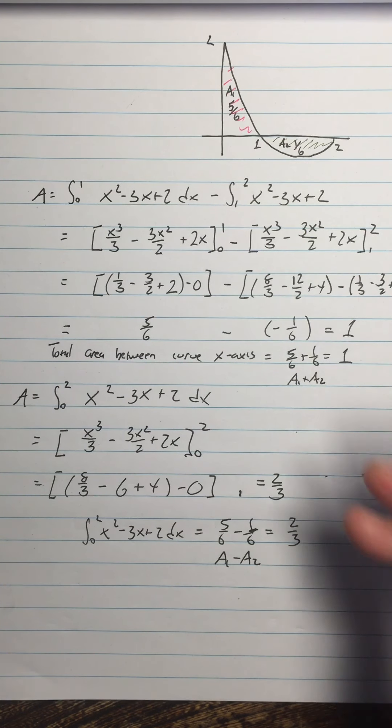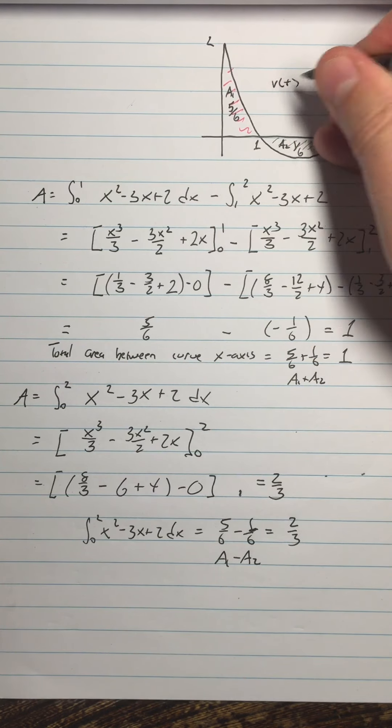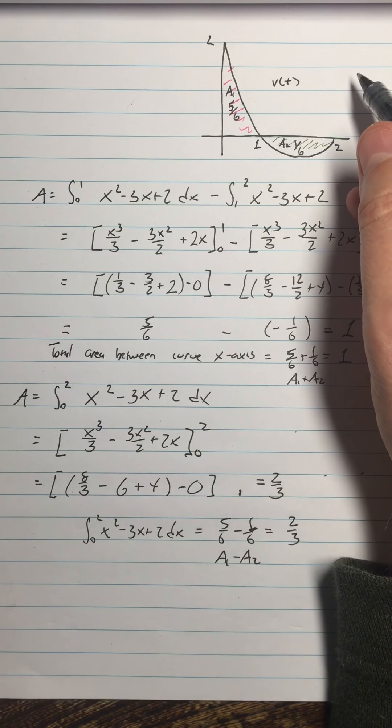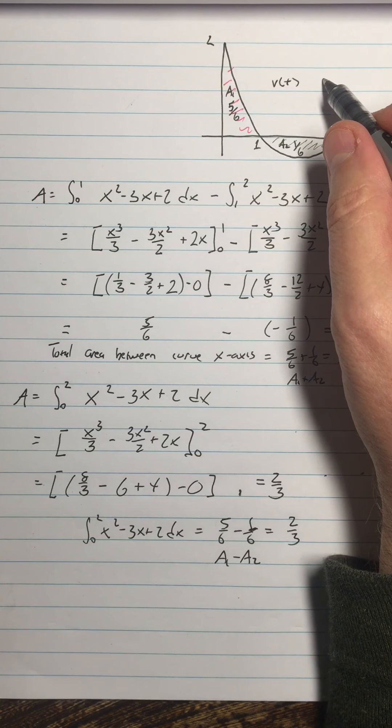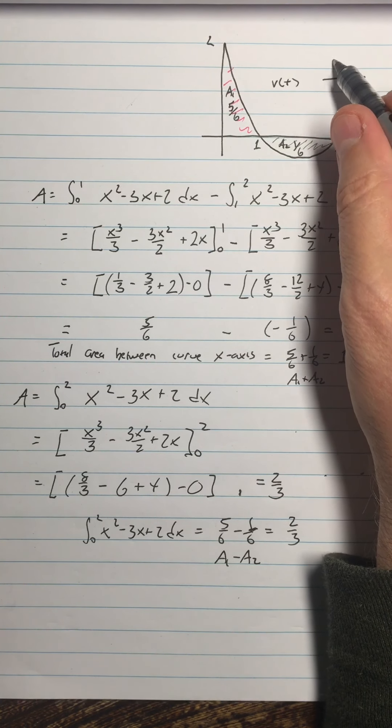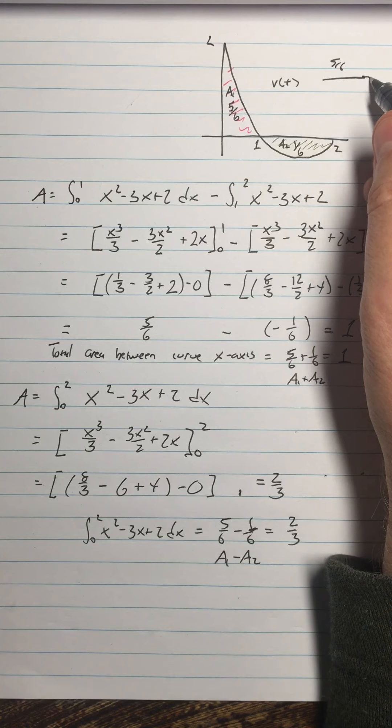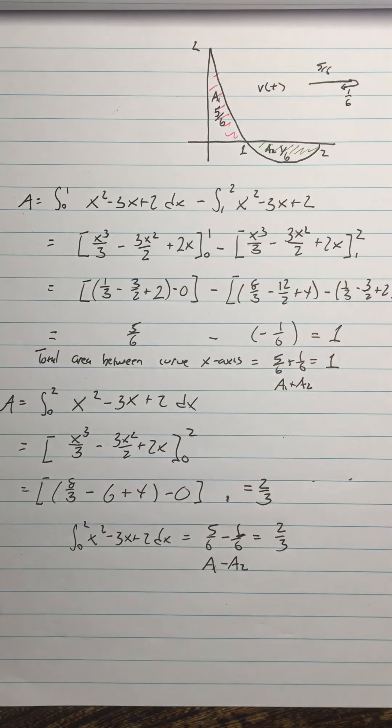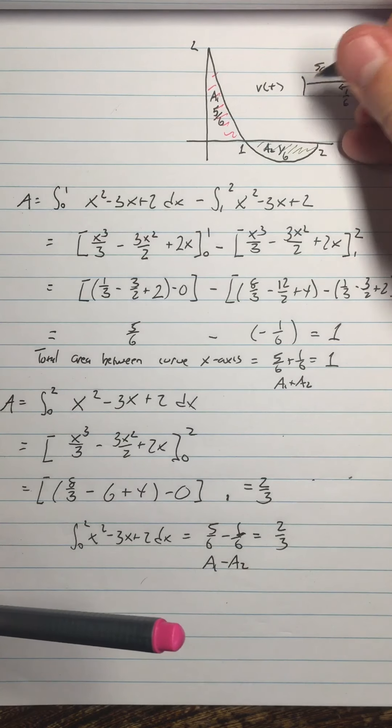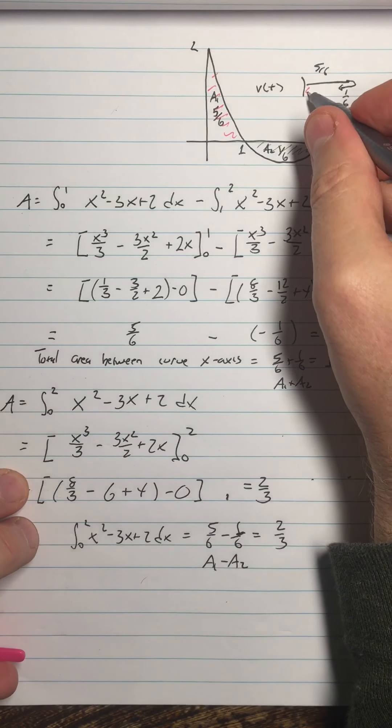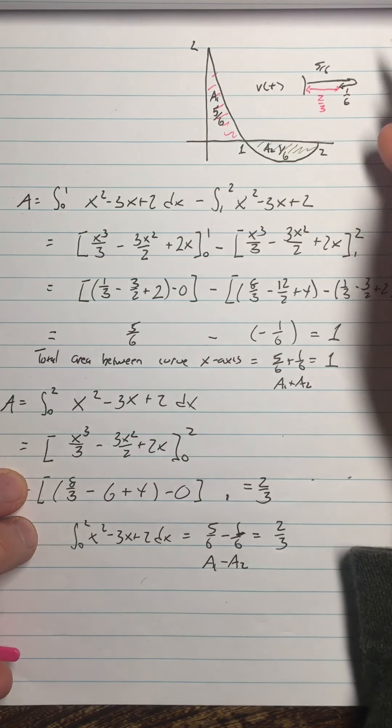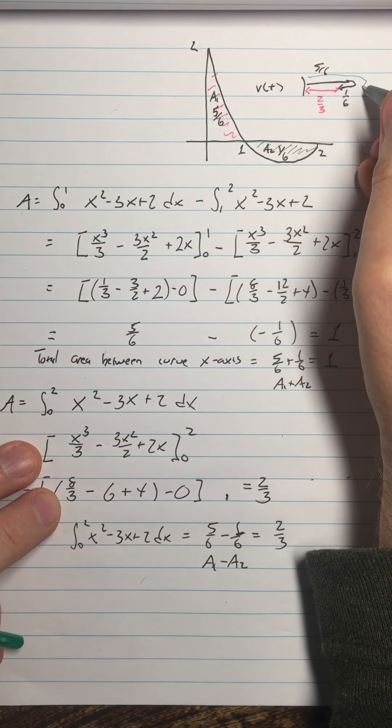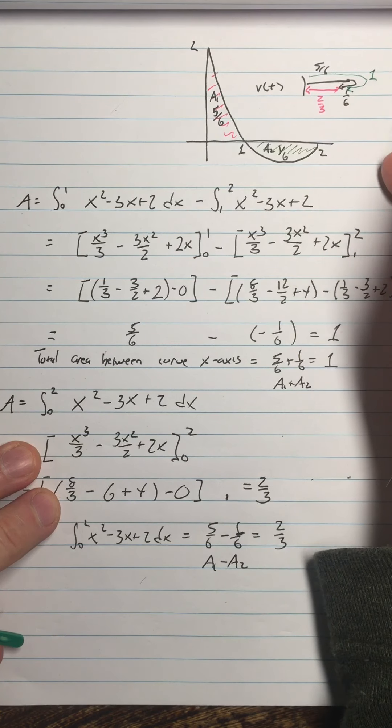So this would be an object like, if this were a velocity curve, let's say, then I would have an object that moved 5 sixths units to the right, and then came back 1 sixth unit. So where that object ended up is 2 thirds from where it started. But the total distance that it traveled was 5 sixths plus 1 sixth, which is 1.